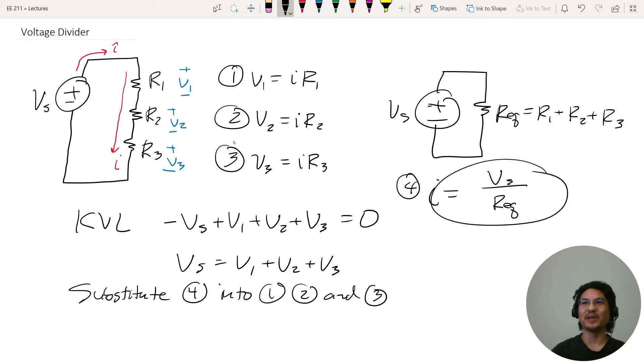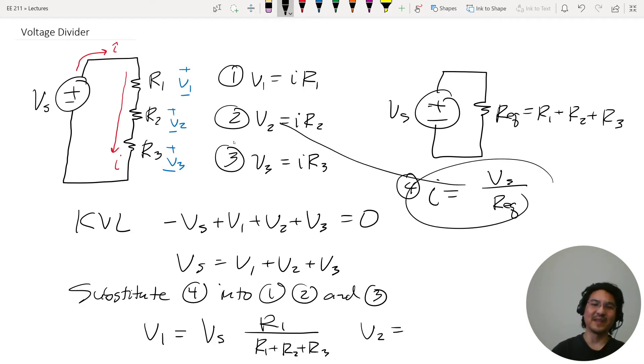All right, so if you substitute this back into here, then you have V1 equals I R1, so then that's Vs R1 over R equivalent. V2 is Vs R2 over R equivalent, and so on.